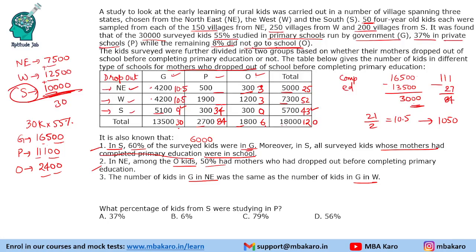These two remaining values can be calculated from the totals. 10.5 plus 3 plus 13.5 — this will be 11.5 (i.e., 1,150). And 10.5, 3, 13.5, and 52 — 52 minus 13.5 equals 38.5, essentially 3,850. So now we have the second table filled completely, which will help us answer the questions.